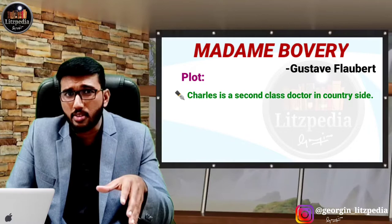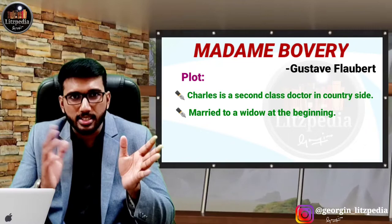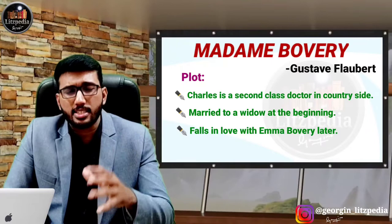He gets married to a widow due to pressure from his mother. After the death of that wife, he falls in love with Emma Bovary and they marry. But after marriage, Emma is too passionate about the relationship while Charles is not passionate enough regarding love and affairs. Because of this, they do not make a good match.